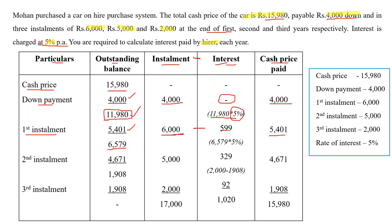The second installment of ₹5,000 is due at the end of the second year. Since this is a delayed payment, we calculate interest on the outstanding balance of ₹6,579. ₹6,579 × 5% = ₹329. Cash price = ₹5,000 − ₹329 = ₹4,671. The outstanding balance becomes ₹6,579 − ₹4,671 = ₹1,908.